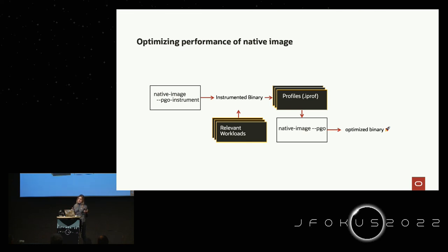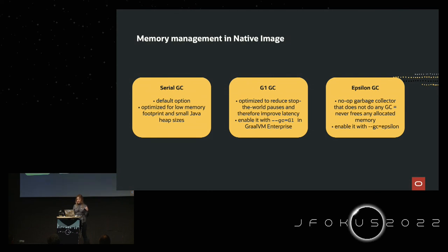With Profile-Guided Optimizations, you run your application in JIT mode, collect profiling information, then feed it to the native image builder at build time. This way you build an executable that is aware of the runtime behavior of your application and can achieve quite significant peak performance. PGO is already available in GraalVM Enterprise, which is the commercial version of GraalVM.